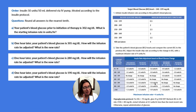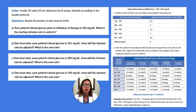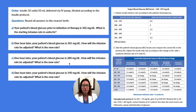However, the protocol states a maximum infusion rate of 4 units per hour. So we're not going to give this at 4.2 units per hour — we'll stick to 4 units per hour. That is our new rate for Part C.